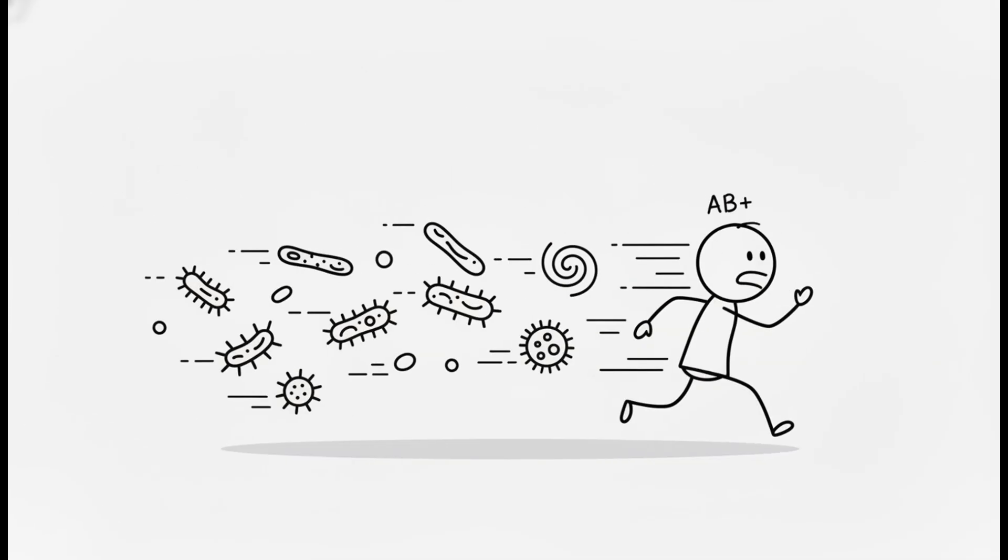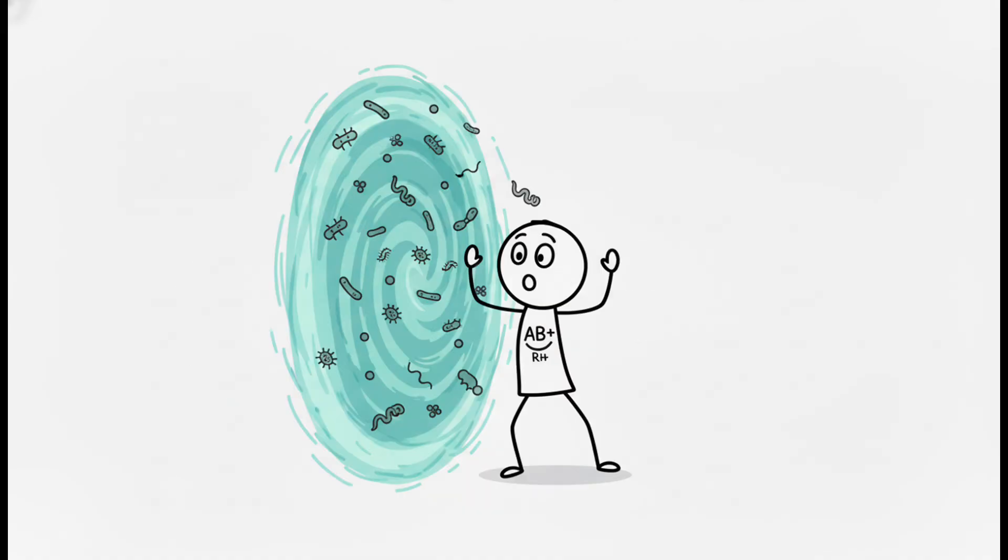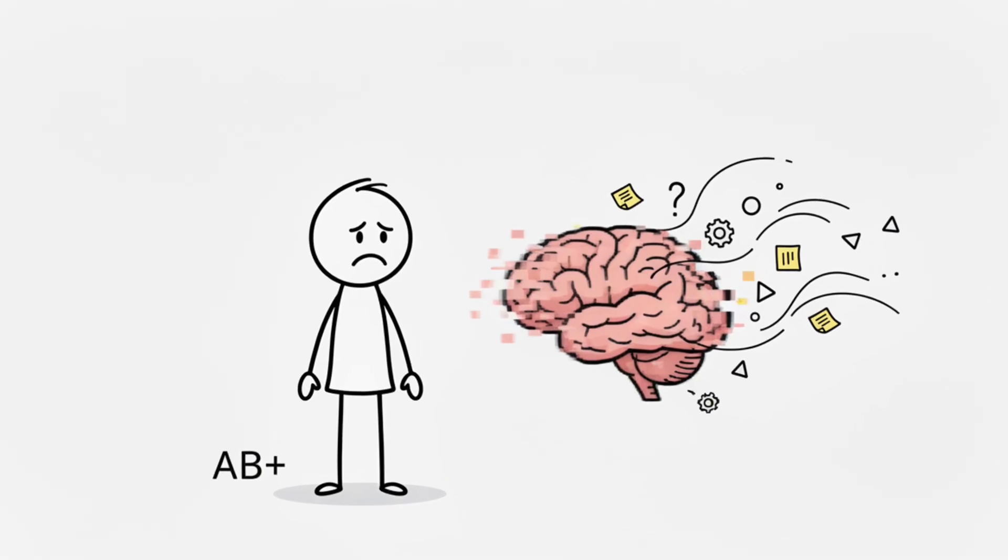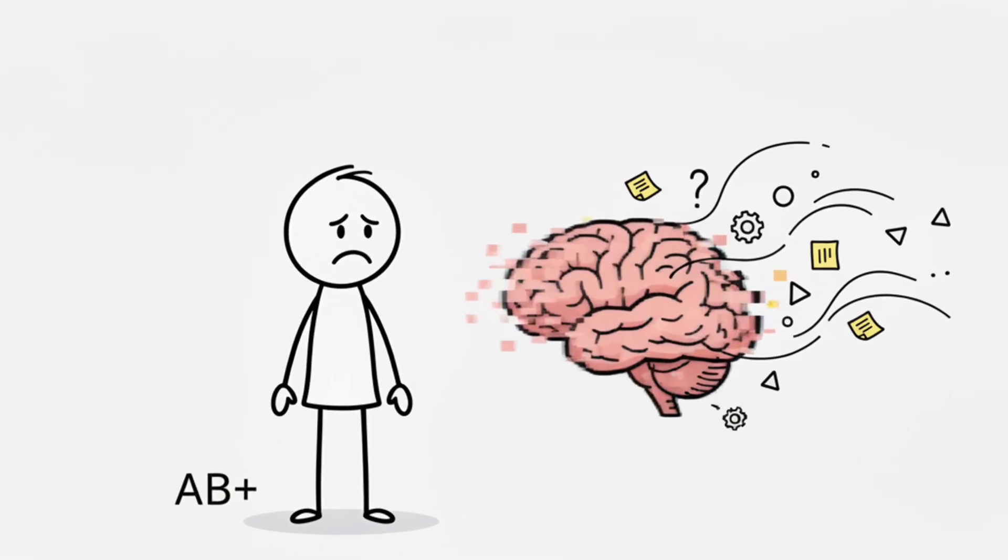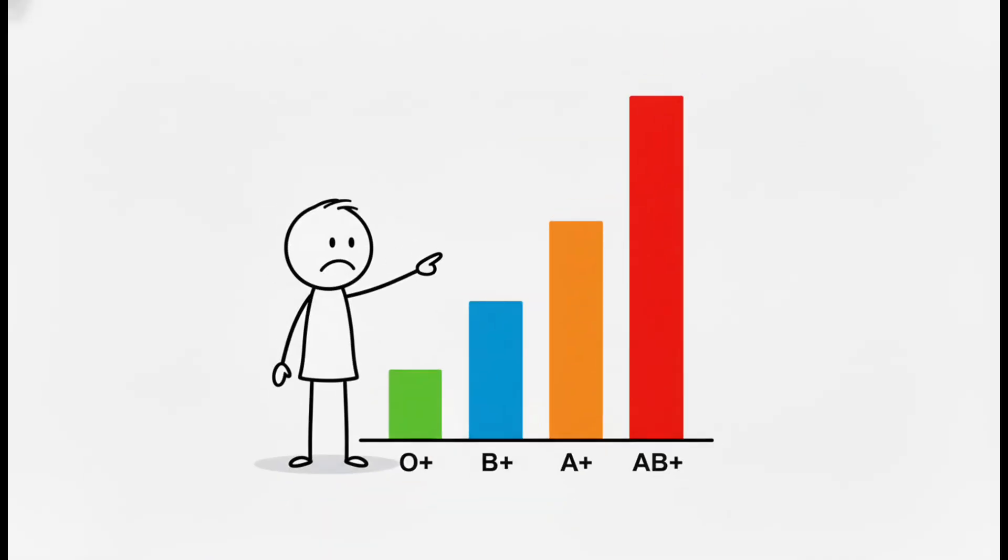AB types are more vulnerable to bacterial infections like E. coli and salmonella. Your gates are left unguarded. Even more disturbing, large studies show AB individuals have the highest risk of cognitive decline and memory loss later in life compared to every other blood type.